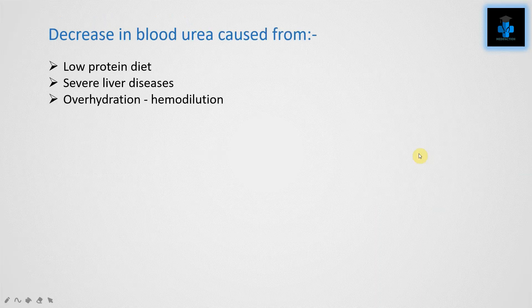Decrease in blood urea is caused by low protein diet, severe liver diseases, and also over-hydration — that is, hemodilution — which may also be a cause for the decrease in blood urea.